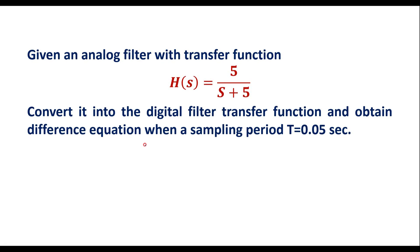In this video, I will consider one numerical to convert an analog filter into a digital filter. Given analog filter with the transfer function H(S) = 5 divided by (S + 5), convert it into the digital filter transfer function and obtain the difference equation when sampling period T is equal to 0.05 seconds.